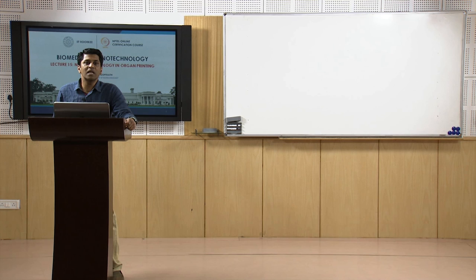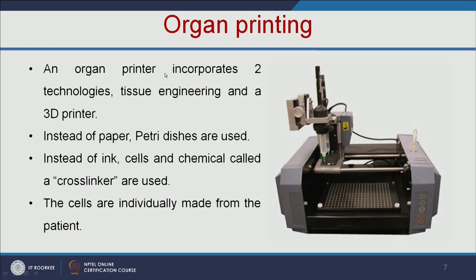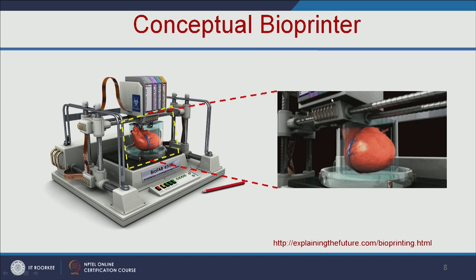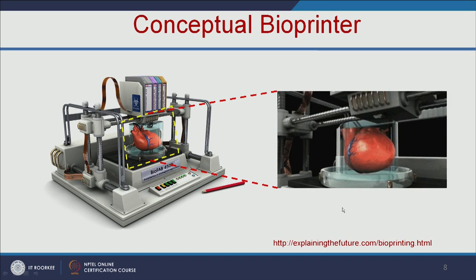In organ printing, we print the artificial organ using 3D printing technology, and here we use biological cells as the ink. We print the organ in a 3D environment to make the complete artificial organ. An organ printer incorporates two technologies: tissue engineering and a 3D printer. It is similar to a normal printer, but instead of paper we use Petri dishes, and instead of ink we use cells and a chemical called cross-linker. We take the cells from the patient's own body, so there will be no immunorejection. This is a conceptual bioprinter — in future, we may get this kind of bioprinter to make customized organs for patients.